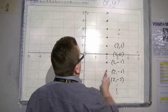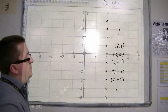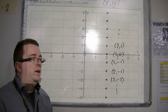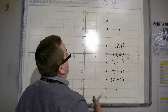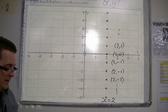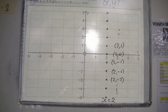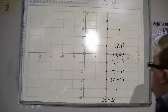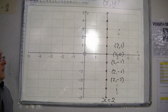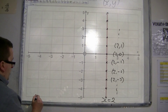They describe a straight vertical line because they all have the same x coordinate: x equals 2. So this line has the equation x equals 2. Coming up in red, you can see x equals 2 — that is the equation that describes that line.